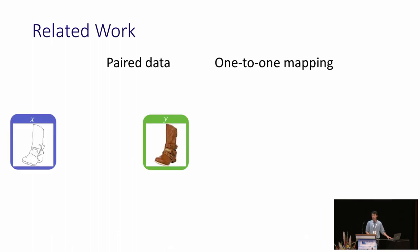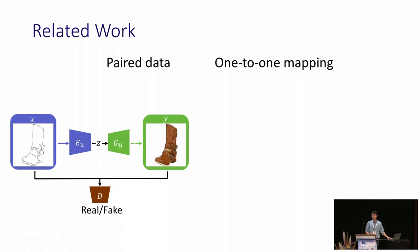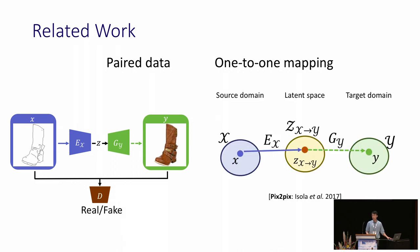I will introduce how previous work addresses these challenges. First, let's put aside all constraints. Assuming we have paired training data, we can ask the model to learn the mapping functions. We can train the model with several losses where a discriminator attempts to discriminate whether the pair is real or fake. It encodes the source domain onto a latent space, then decodes it to the target domain.